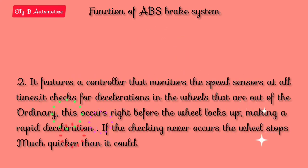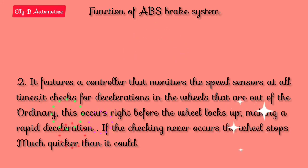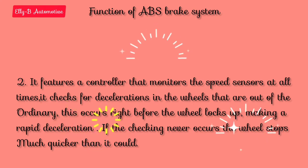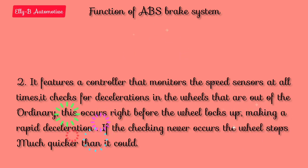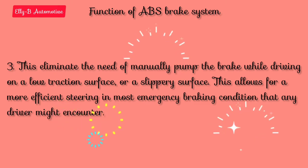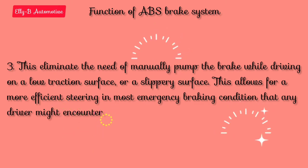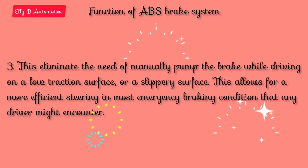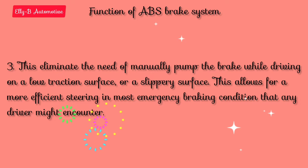The second function of the anti-lock brake system is that it features a controller that monitors the speed sensors at all times. It checks for deceleration in the wheels that is out of the ordinary. This occurs right before the wheel locks up, causing rapid deceleration. This eliminates the need to manually pump the brakes while driving on a low-traction or slippery surface, allowing for efficient steering in most emergency braking conditions.